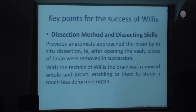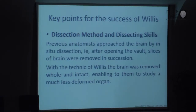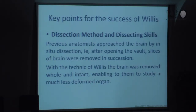What were the key points for the success of Willis? First of all, he used a different method of dissection and was very skillful in this work. Before him, previous anatomists approached the brain in situ — they made dissections after opening the vault and sliced the brain without removing it. He was one of the first to remove the brain before making a dissection. This, of course, gave him a very good view of the basal structures that were not visible with the previous method.